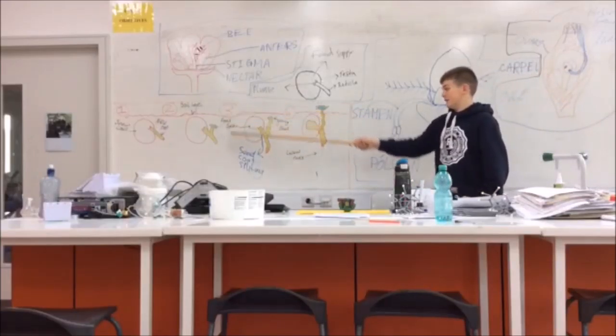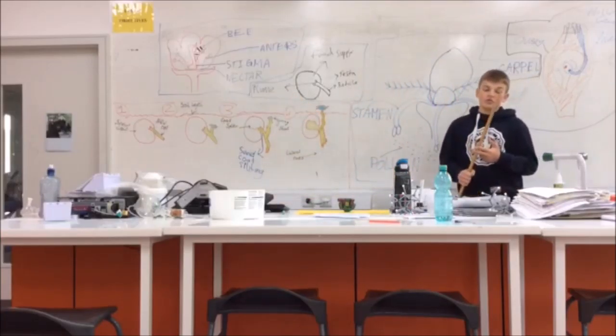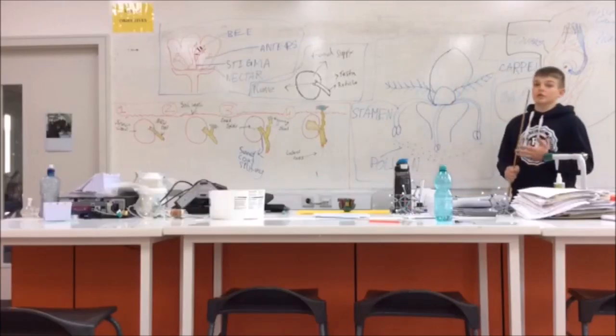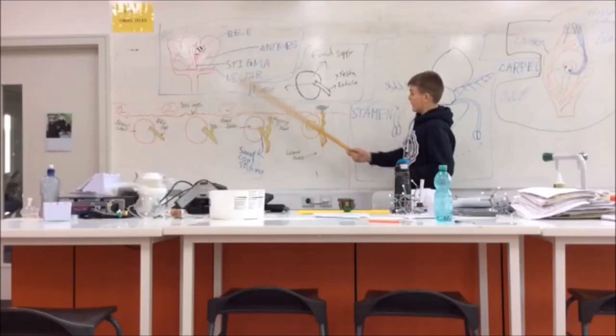Now the final step in becoming a new plant is germination, which is displayed in this slide around here. For germination to occur, seeds need oxygen, moisture, usually water, and the right temperature.